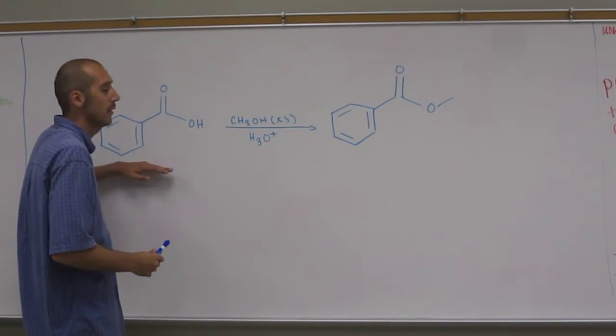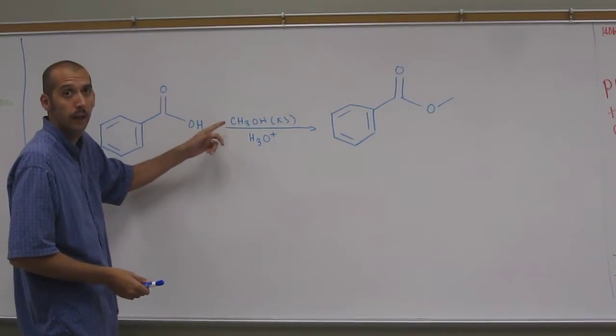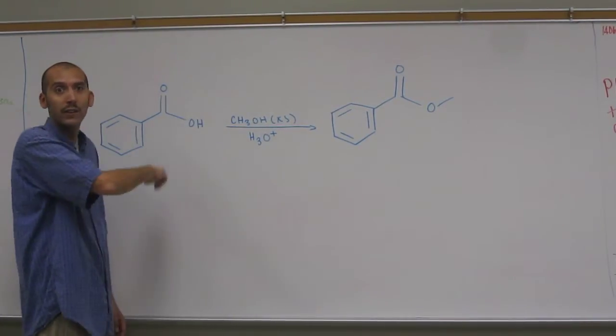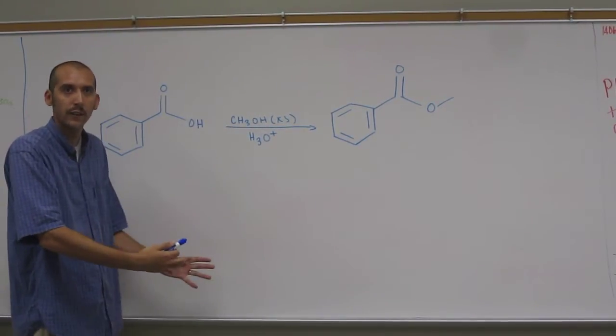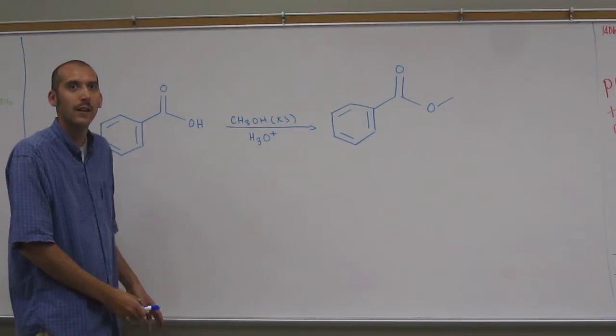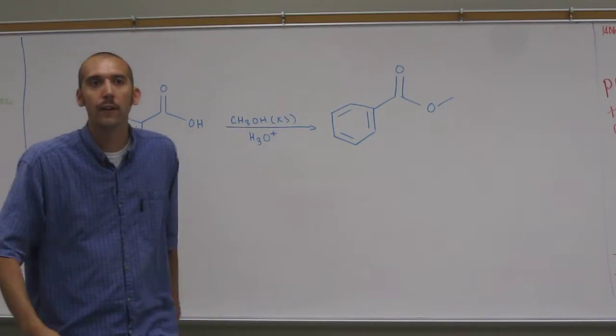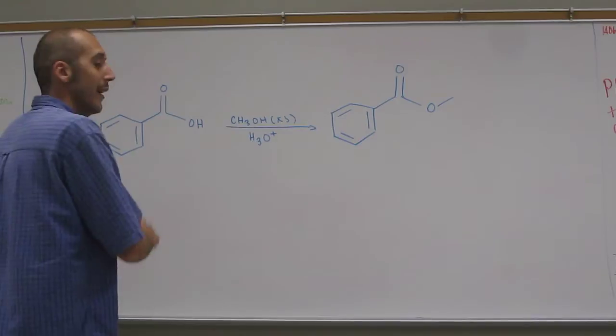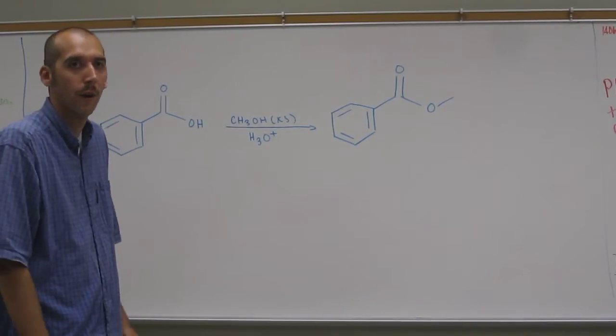So you got two reactants, benzylic acid and methanol. This is going to be in a solvent of methanol. That's the solvent. Where it says excess, that means excess. It's the solvent. So it's really going to push that reaction towards the right.